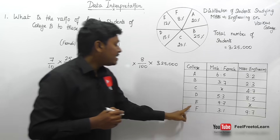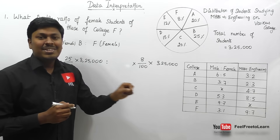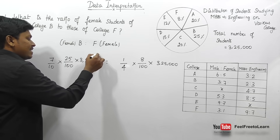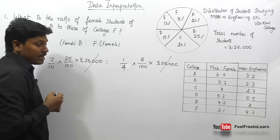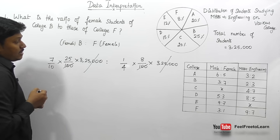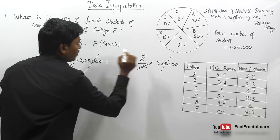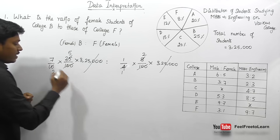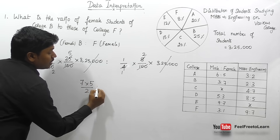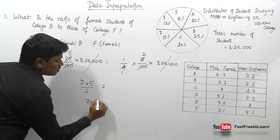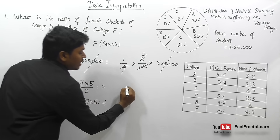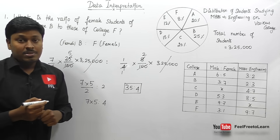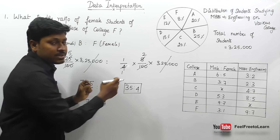We can cancel the 3,25,000 and both 100s from numerator and denominator. After cancelling, we have: college B female = 25 × (7/10), college F female = 8 × (1/4). Simplifying: cancel fours — 2 fours are 8 — and then five tables. The remaining gives 7×5 in the numerator and 2×2 = 4 in the denominator.